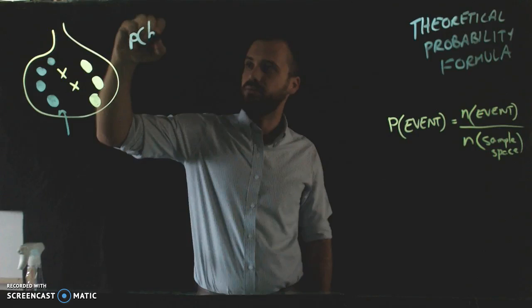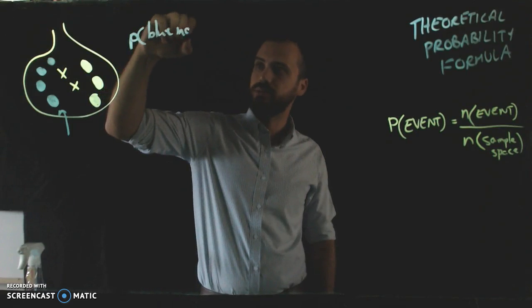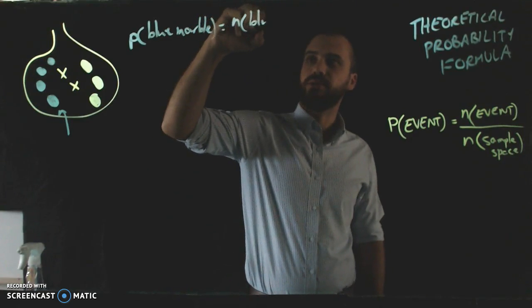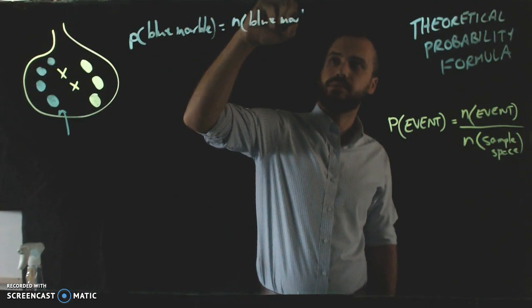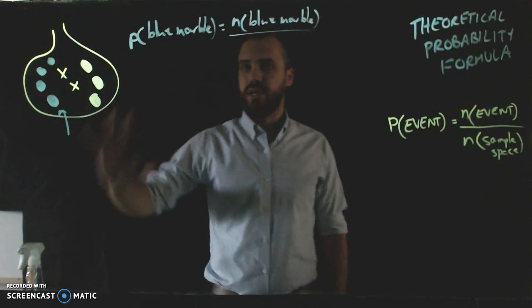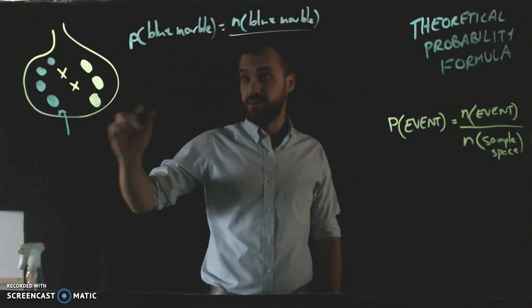The probability of pulling out a blue marble is equal to the number of blue marbles divided by the sample space, the size of the sample space.